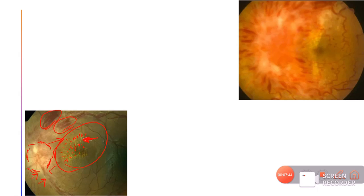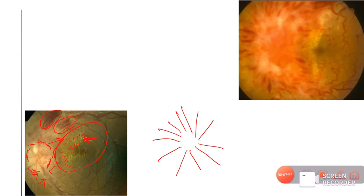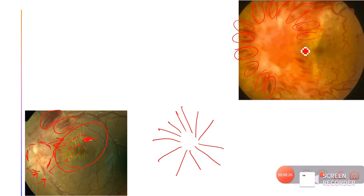A complete macular star — hard exudates radiating from the macula in 360 degrees — is usually seen in neuroretinitis. In papilledema the macular star is incomplete, projecting nasally toward the disc. Another case shows florid papilledema where the disc is almost invisible, with disc hemorrhages all around, indicating an acute condition, along with vessel tortuosity, dilatation, lipid exudates, and cotton wool spots.